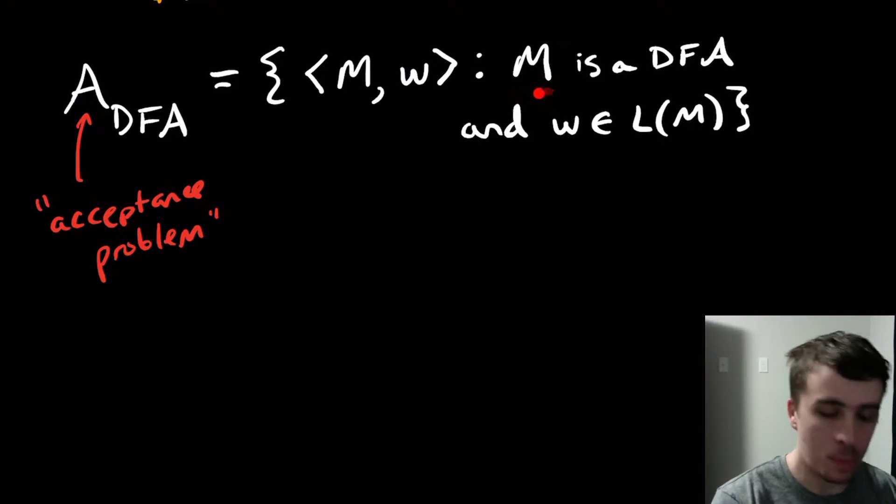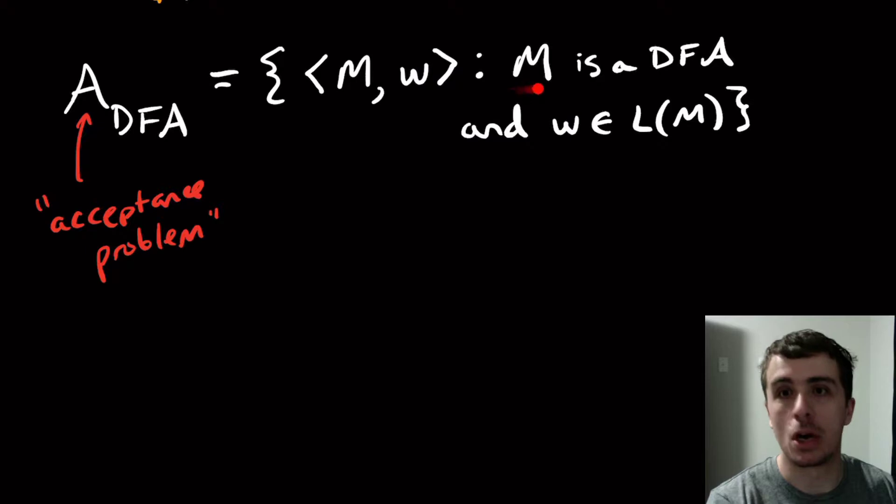And we require that w is in the language of that machine. Notice I don't put angle brackets on this because I'm talking about the actual machine here. But here, in order to actually put it in the language, I require it to be an actual string. So that's why we do the encoding here.